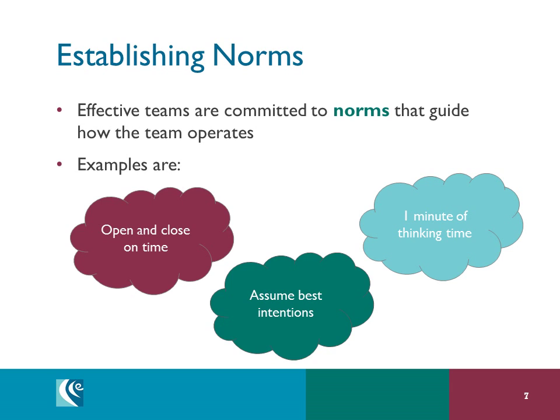Norms are agreements within a PLC on how they'll behave in their conversations. Sometimes these can seem artificial — folks might say, we're adults, can't we just talk? But explicitly stating expectations can create an efficient and safe conversation space. A norm of opening and closing on time may improve efficiency. A norm about assuming best intentions may improve the mindset of the team. A norm asking for one minute of thinking time before a question is addressed can help less gregarious folks gather their best thinking before the talking begins.